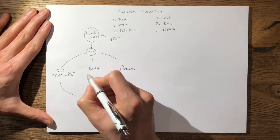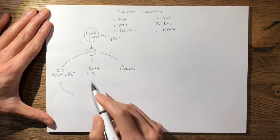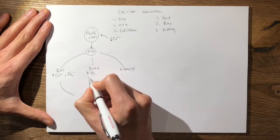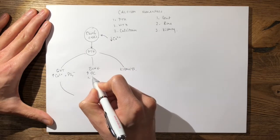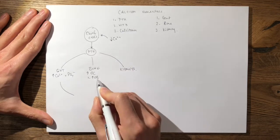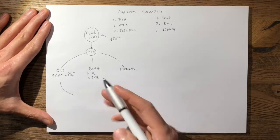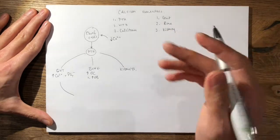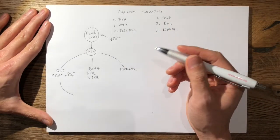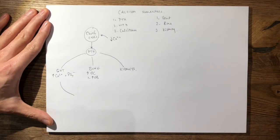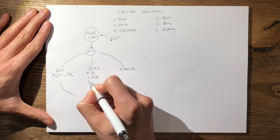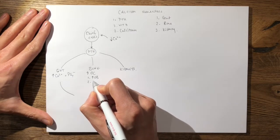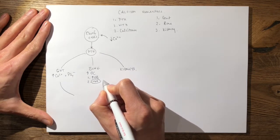In the bone, parathyroid hormone increases osteoclastogenesis — it increases the activity and maturation of osteoclasts by three main mechanisms. Firstly, it increases osteoblastic differentiation, which signals via the RANK ligand–RANK pathway to pre-osteoclasts, causing mature osteoclasts. Resorbing the bone releases calcium and phosphate. The second mechanism is through inhibiting osteoprotegerin, or OPG.